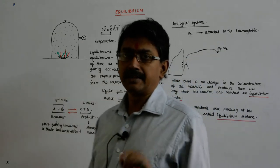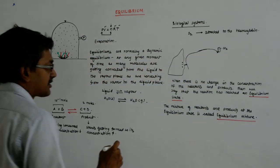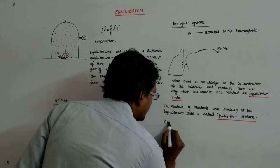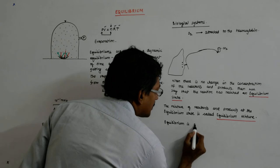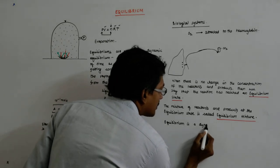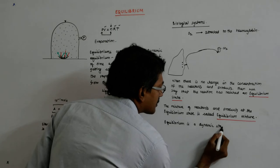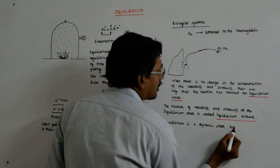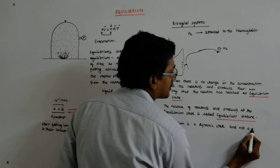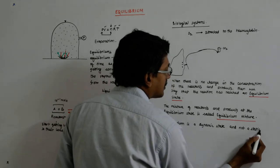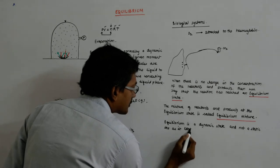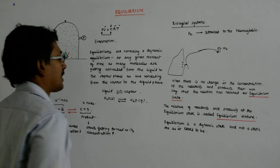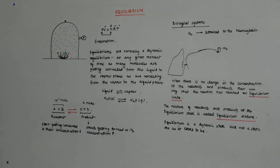We know that equilibrium is not a static but a dynamic state, and not a static one as it looks to be.